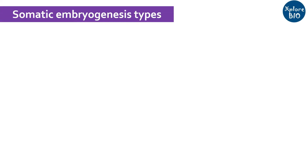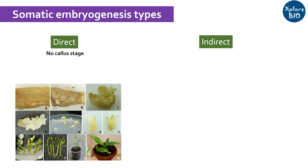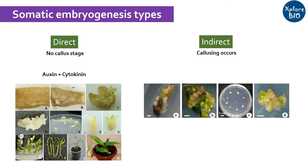Similar to organogenesis, somatic embryogenesis is also of two types: direct somatic embryogenesis and indirect somatic embryogenesis. In direct somatic embryogenesis, the embryo is directly generated from the explant source without a callusing stage. In this figure, you can see that the leaf sheath starts to develop somatic embryo. Auxin and cytokinins play an important role in direct somatic embryogenesis. In indirect somatic embryogenesis, first callusing is induced where auxin plays an important role, and later the somatic embryo is developed.